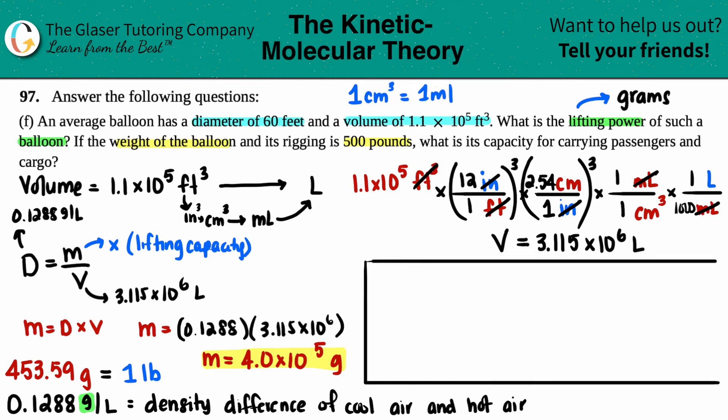The balloon weighs 500 pounds. We need to know the maximum weight that can be on the balloon to lift off the ground. The lifting power is in grams, but the weight is in pounds. First, convert the lifting power of 4.0 × 10⁵ grams to pounds to get the same units. The conversion is 453.59 grams equals 1 pound.